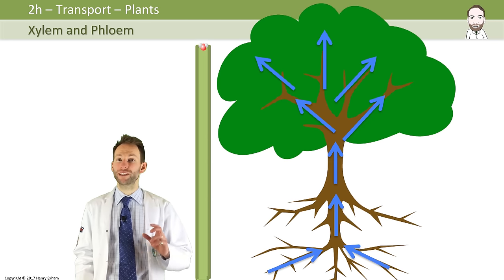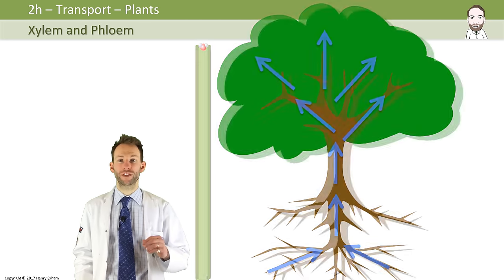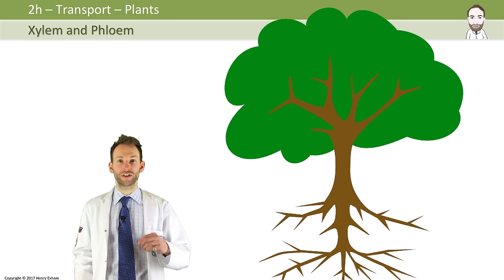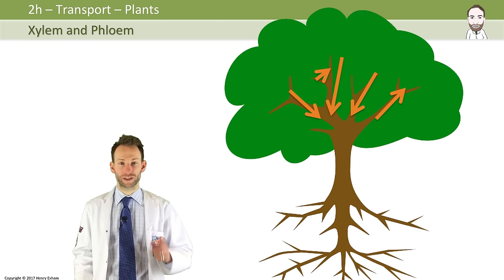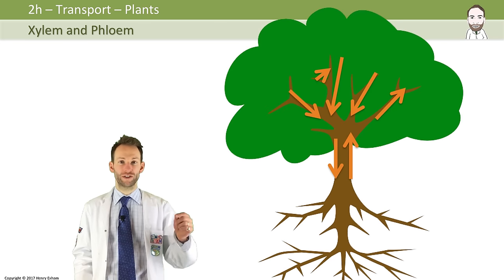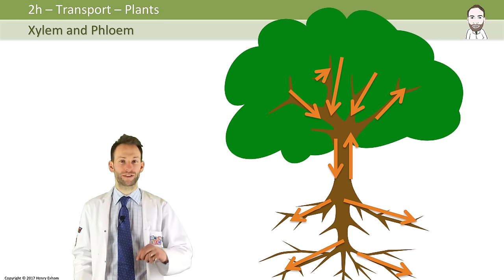The phloem is a little bit different. The phloem transports products of photosynthesis made in a leaf to all other parts of the plant, so it's not just going in one direction. It goes to where it is needed. It can go up the plant or down the plant.